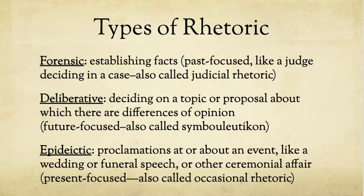We also have different types of rhetoric, which gets to the context piece of a rhetorical situation. Any given rhetorical situation will generally do one of three things. If it's forensic rhetoric — just like a forensic scientist tries to establish the facts at a crime scene — forensic rhetoric tries to establish facts. It's past-focused, concerned with things that already happened, reconstructing them, like a judge who makes evaluations and judgments based on evidence. This is also called judicial rhetoric.